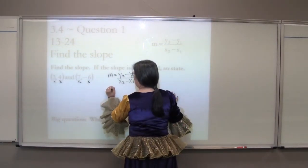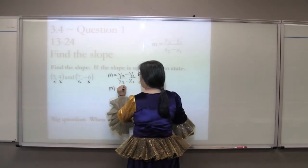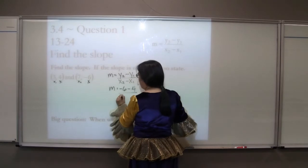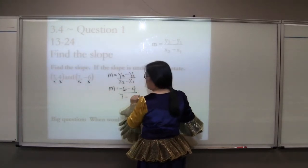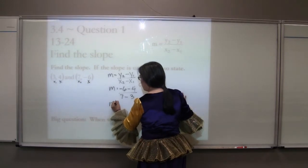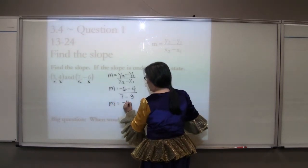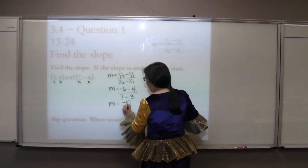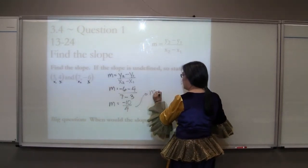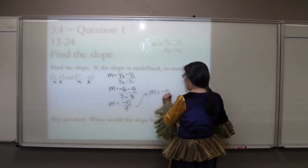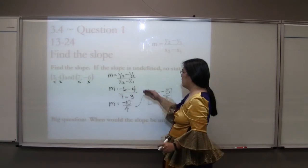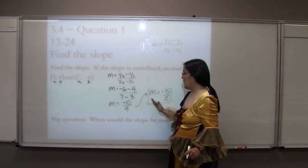We're going to plug in. We have y2 is negative 6 minus y1 is 4. x2 is 7 over x1, or minus x1 which is 3. That is our plug step. Our work step, we get negative 10 over 4. Answer. Our answer, as we come up here into our next column, reduce that to negative 5 over 2. These are the four things I'm looking for: formula, plug, work, and answer.